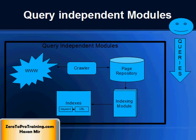The four modules we have talked about — namely crawler, page repository, indexers, and indexes — operate independently of users and their queries. These are query-independent modules. In other words, spiders are constantly crawling the web, bringing back new and updated pages to be indexed and stored, irrespective of users performing queries.